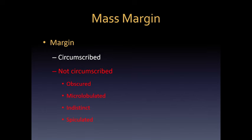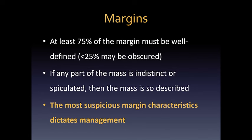By definition, we have to see at least 75% of the margin to call it circumscribed. So if any part of the mass is indistinct or spiculated, we describe the mass according to the most suspicious characteristics. Any suspicious feature in the margin that is present should dictate the management.